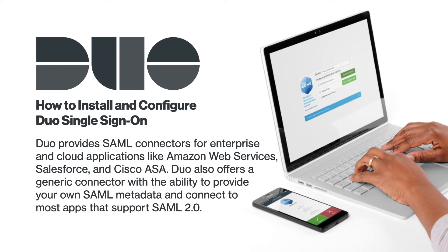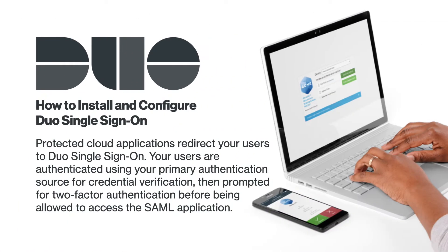Duo provides SAML connectors for enterprise cloud applications like Amazon Web Services, Salesforce, and Cisco ASA. Duo Single Sign-On also offers a generic connector with the ability to provide your own SAML metadata and connect to most apps that support the SAML 2.0 standard. Protected cloud applications redirect your users to Duo Single Sign-On, where they are authenticated using your existing primary authentication source and then prompted for two-factor authentication before being allowed to access the SAML application.